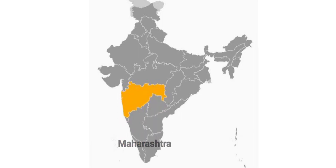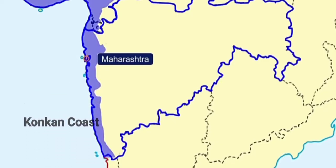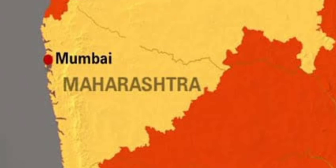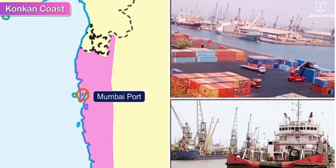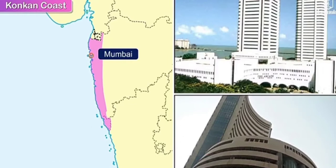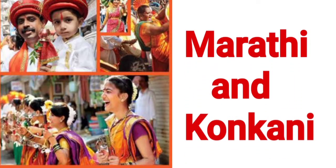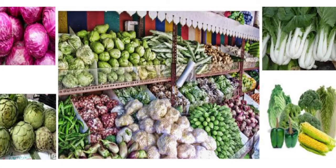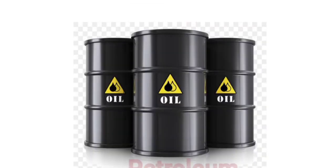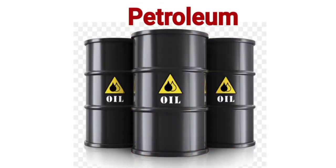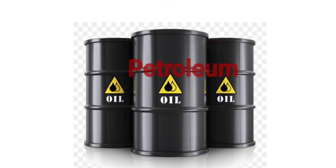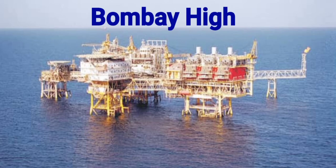Maharashtra is situated on the Konkan coast. Mumbai is the capital city of Maharashtra. Mumbai port is a natural harbour and is also India's biggest port. It is India's commercial capital and a very big trade centre. People of Maharashtra speak Marathi and Konkani. There are different types of crops and fruits grown here. Large deposits of petroleum are available at the seabed near Mumbai, and this site is called Bombay High.